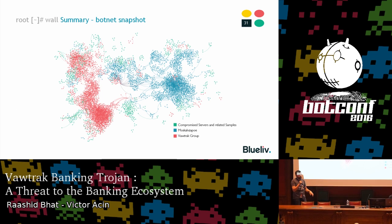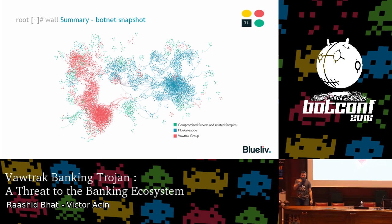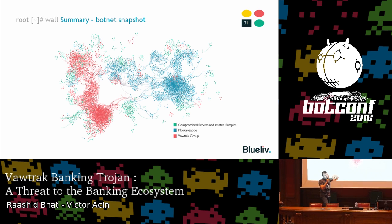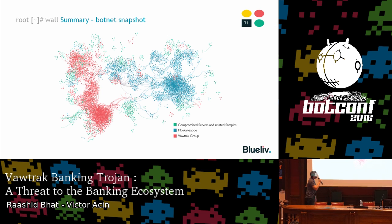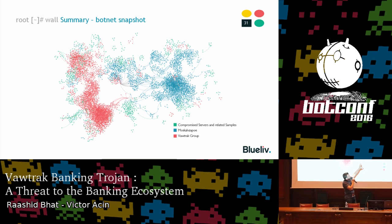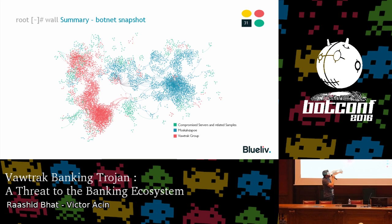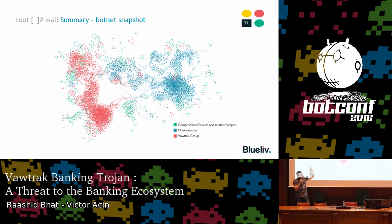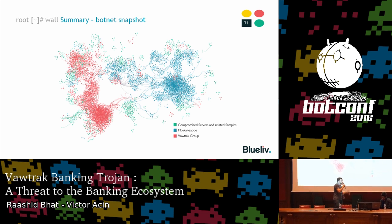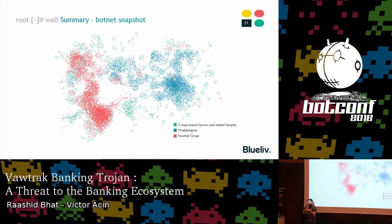What you can see here is a snapshot of the infrastructure of Moscow Zappo and Vawtrak from September 2015 to July 2016 — essentially a long-exposure photograph. The red nodes represent the Vawtrak group infrastructure, and the Moscow Zappo infrastructure is represented by blue nodes. We have two differentiated infrastructures mostly connected via green dots, which represent compromised servers and related samples that allowed us to link both groups.